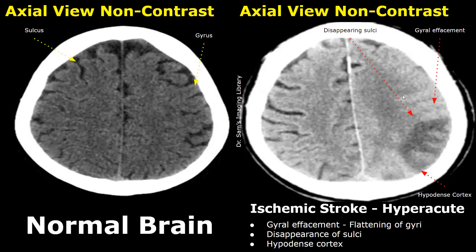We can see these folds are straight. Also, we will notice disappearance of sulci — we do not see these grooves between the gyri. This is due to increasing swelling of the brain tissue at the affected site. We will also find hypodense cortex at the site of infarction.